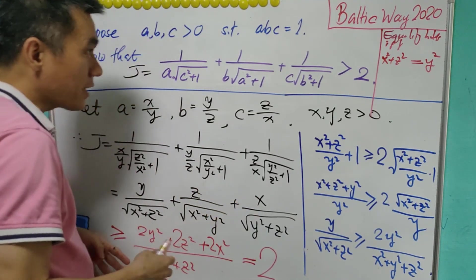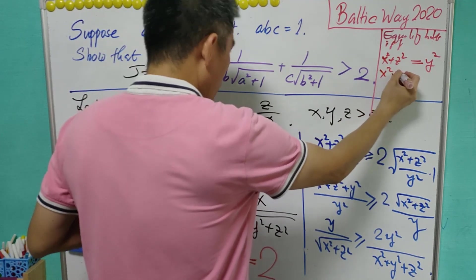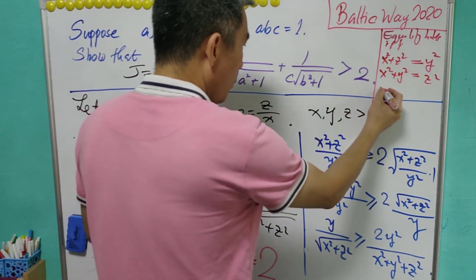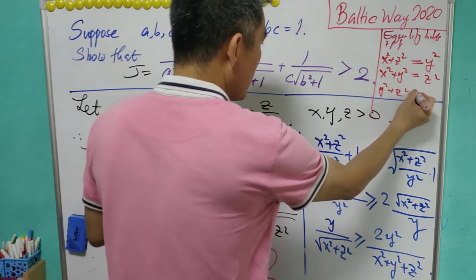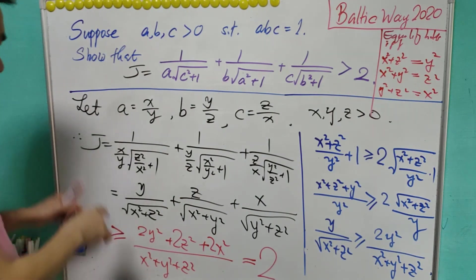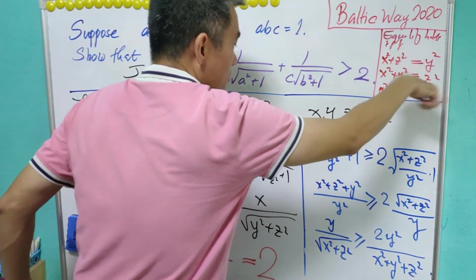And which means that in that case, x squared plus y squared equals z squared, and y squared plus z squared equals x squared. So J can be equal to 2 if all these conditions satisfy.